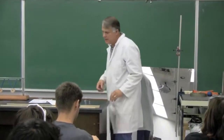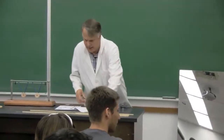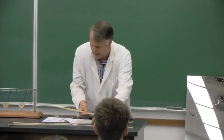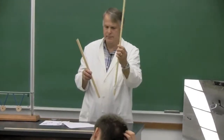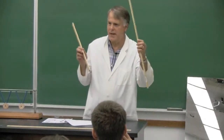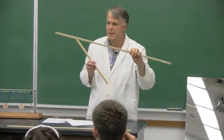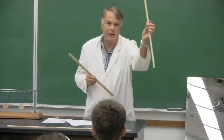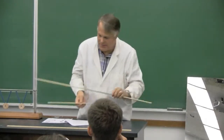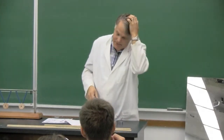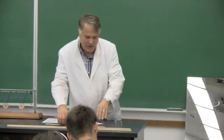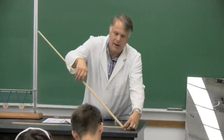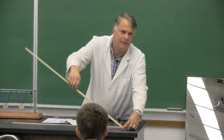I have these two meter sticks here — one is half the length of the other. These two have the same mass, but it's definitely half a meter stick — half a meter stick, depends how you slice it, right? And the question comes up: what happens if you take these two meter sticks and drop them? Which one will hit the tabletop first?